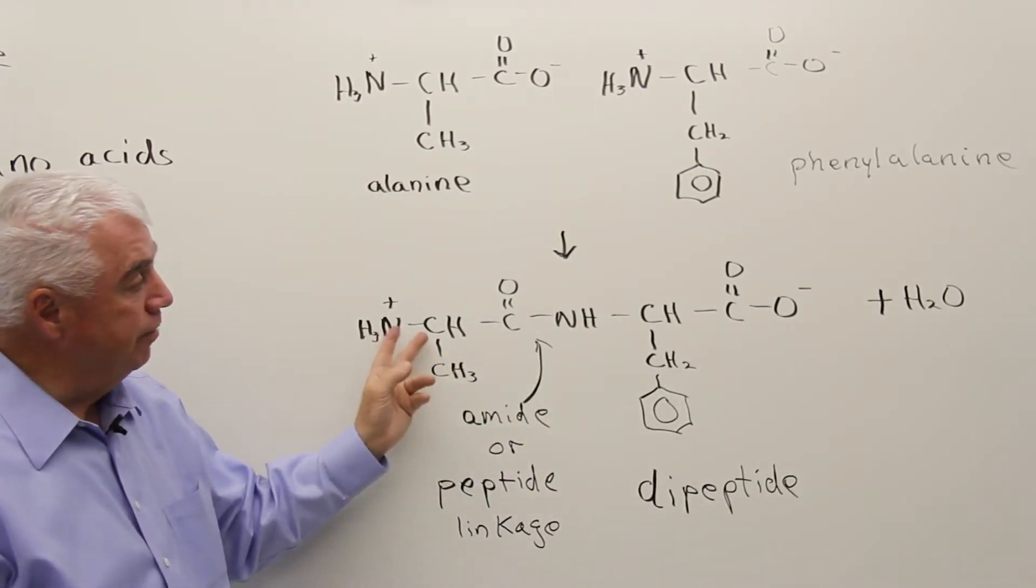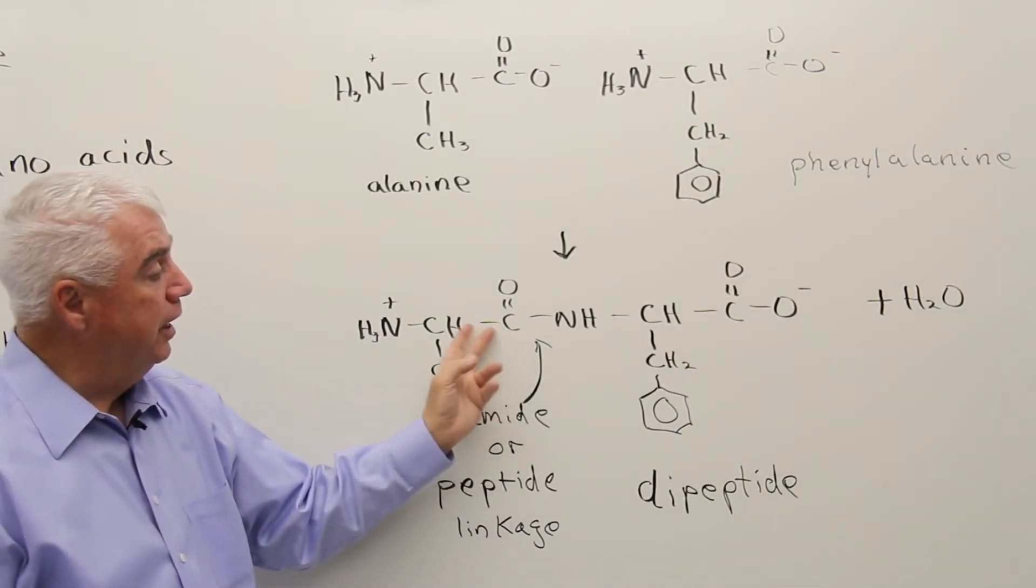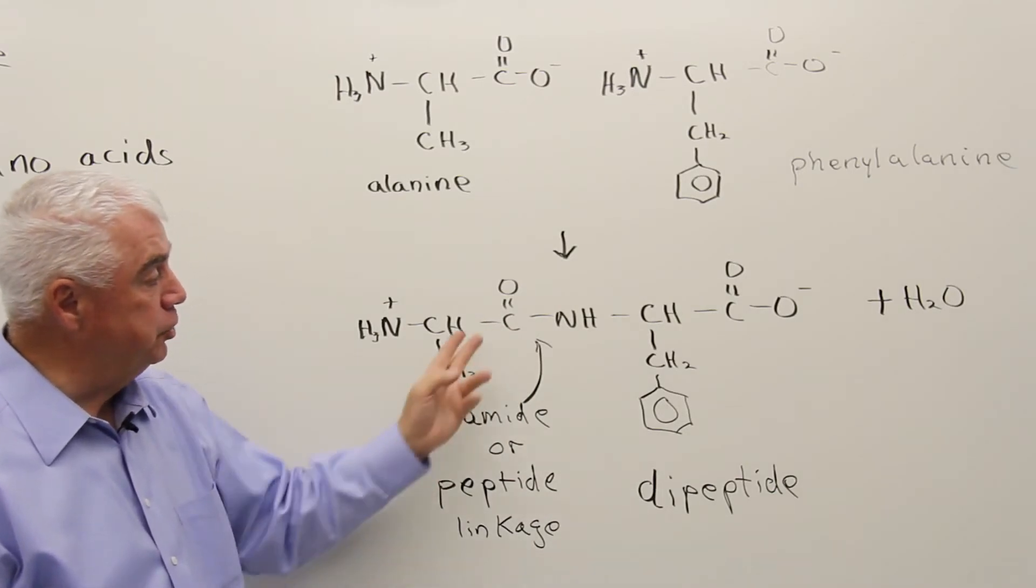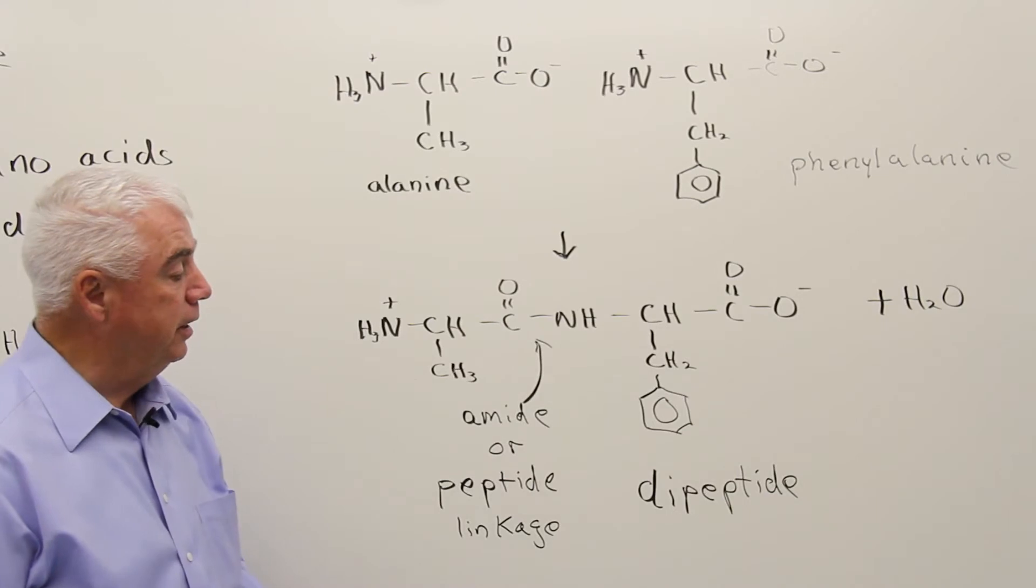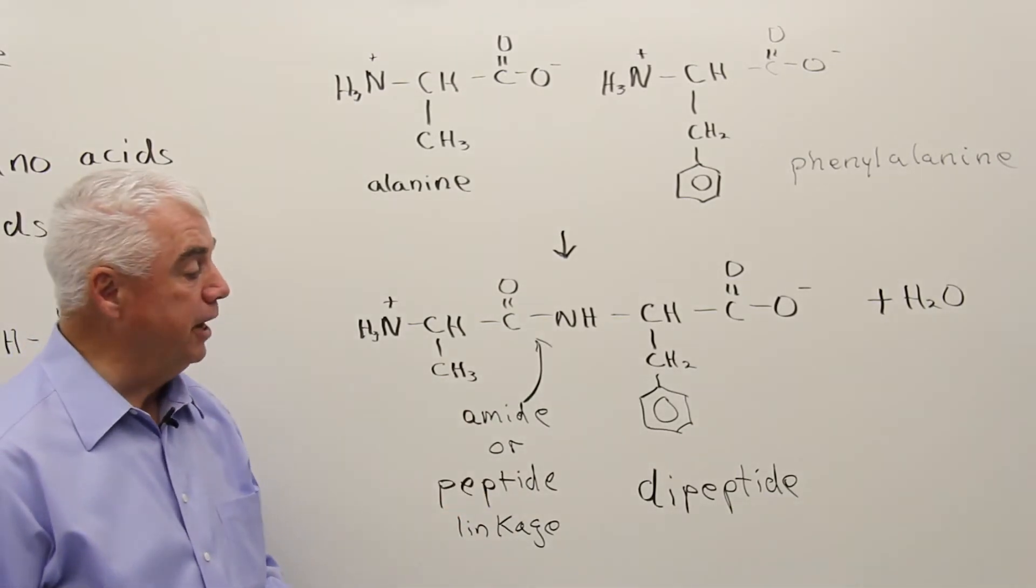But living organisms can very handily combine two amino acids to get what we call a dipeptide. And here we've eliminated a water molecule between these two structures, and the two amino acids are now joined by this amide linkage, a C double bond O connected to a nitrogen. And in protein chemistry, we refer to that as a peptide linkage.